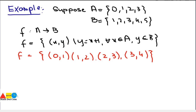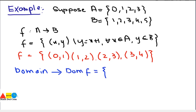By using this function we can find the domain, range and co-domain. First we will find domain. Domain of F is represented as the set of first elements of the ordered pairs, which are {0, 1, 2, 3}. So this is the domain.